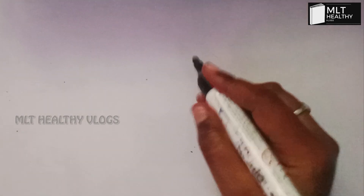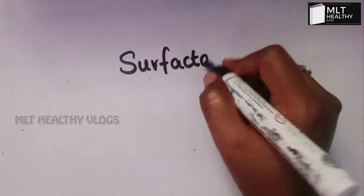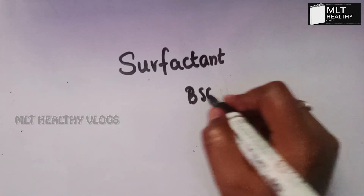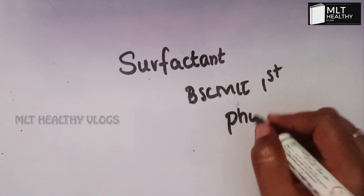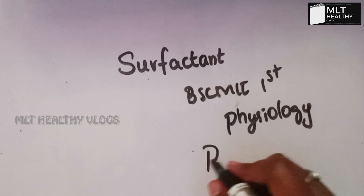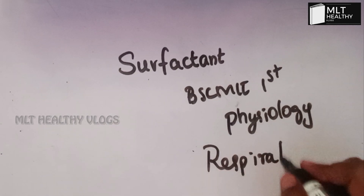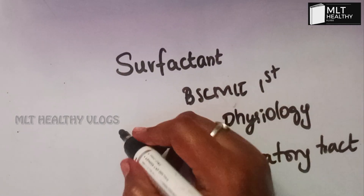The question is about BSMALT. The first tier is the respiratory track of BSMALT. The surfactant question is worth 5 marks and 3 marks.